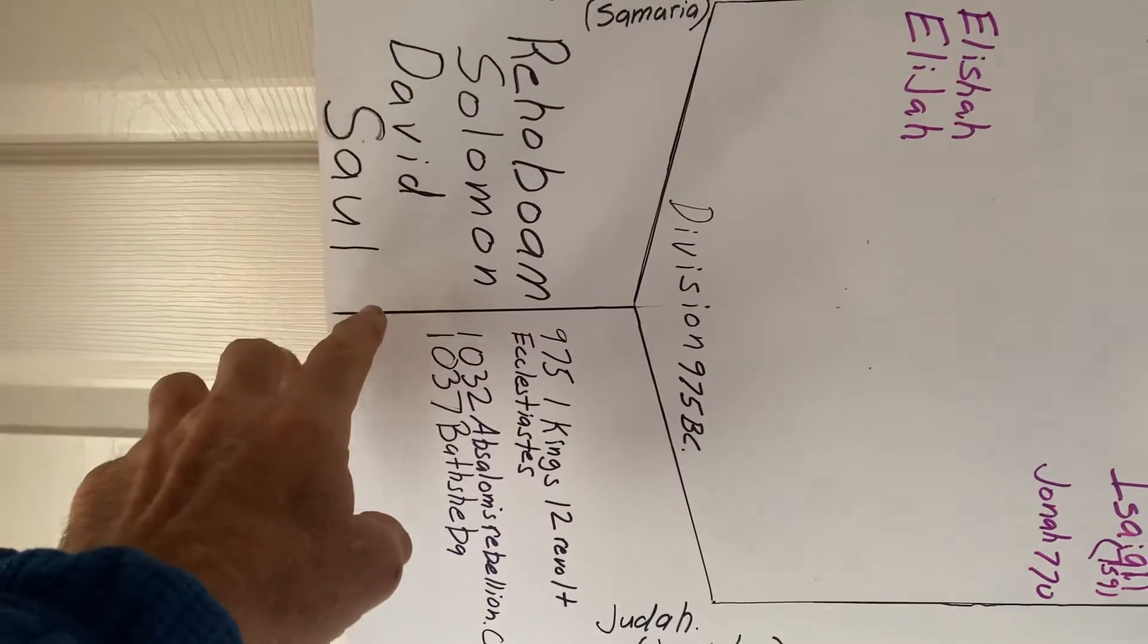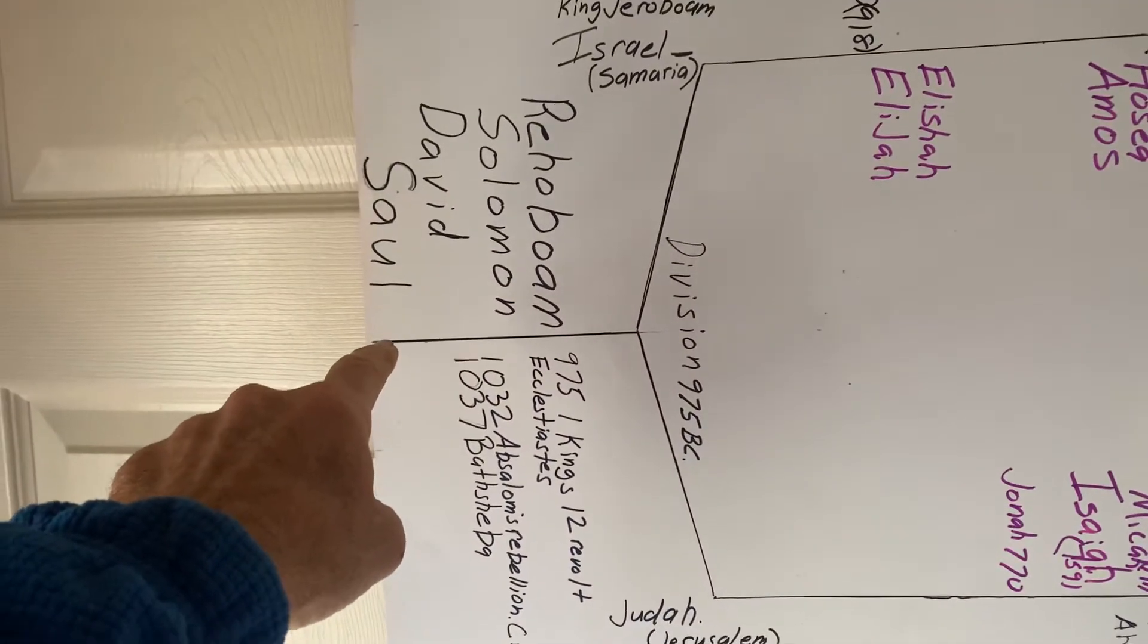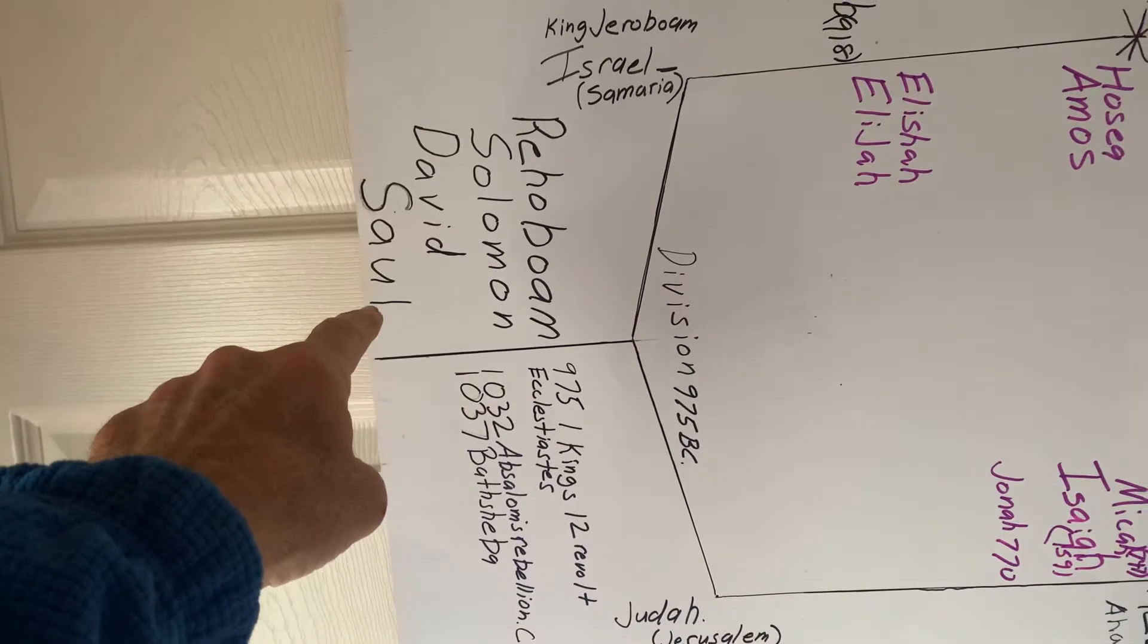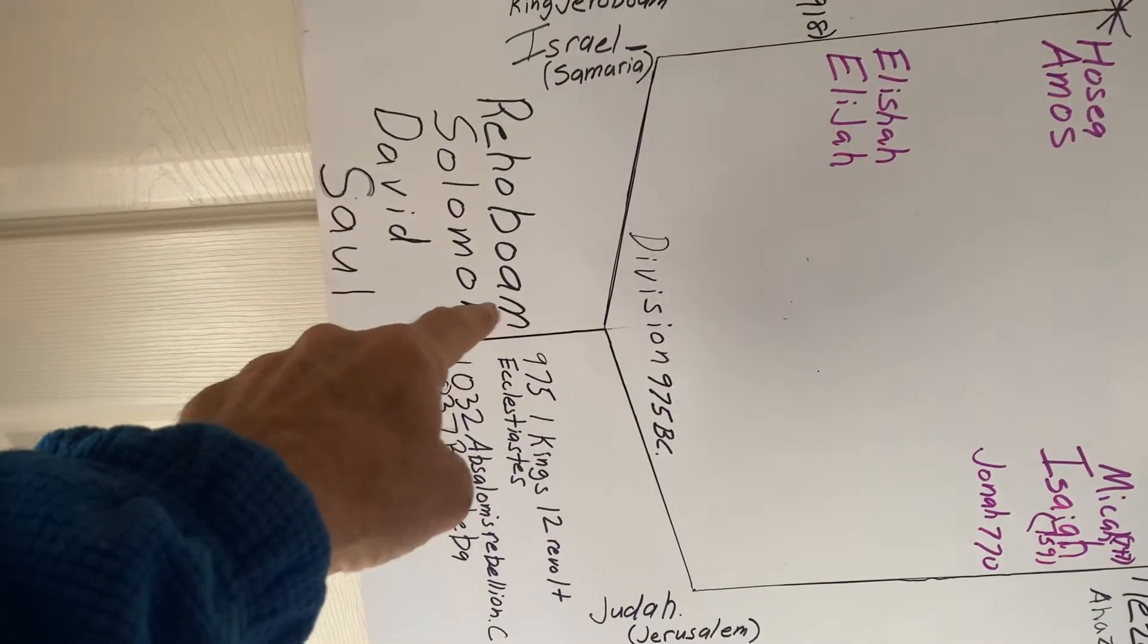This is a time when Israel is a united kingdom. These are the kings: Saul, David, Solomon, and Rehoboam.